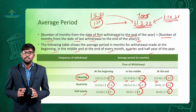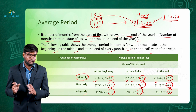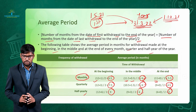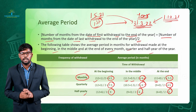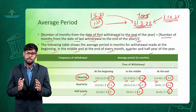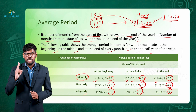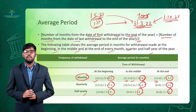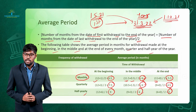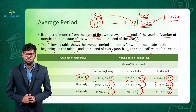That covers the concept of calculation of interest on drawings by the average method. To summarize this series on important concepts under partnership accounting: we covered three concepts — first, partnership deed; second, past adjustment; and third, calculation of interest on drawings. From the next series onwards, we will move to a new chapter: treatment of goodwill in partnership accounting. Stay tuned and watch the upcoming videos. Thank you.